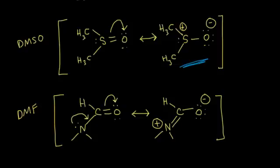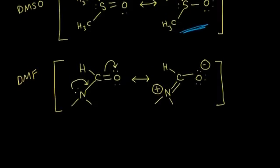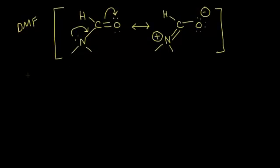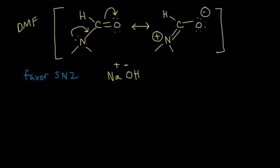Polar aprotic solvents favor an SN2 reaction. They do so by increasing the strength of the nucleophile. If we consider a reaction of an alkyl halide with sodium hydroxide — Na plus OH minus — our nucleophile is the hydroxide anion, and a polar aprotic solvent is going to increase the nucleophilic strength of that hydroxide anion.